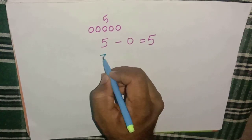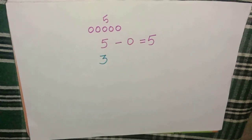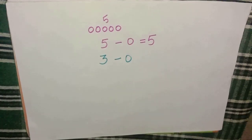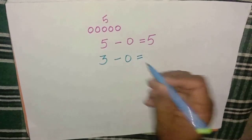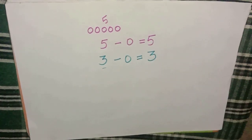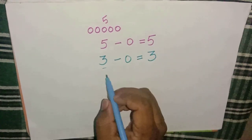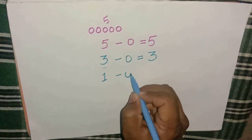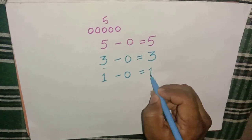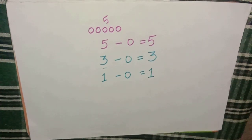Say you have three chocolates and you didn't give any to anyone — that means zero. Three minus zero equals three. One more example: one minus zero equals one.